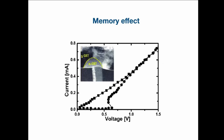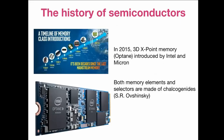This memory effect has been commercialized in optical discs like CD, DVD, and Blu-ray — essentially the same principle and material. About five years ago, Micron and Intel announced a new concept for electronic memory, 3D XPoint Optane, and now most computers have this Optane memory.